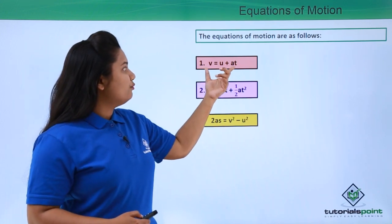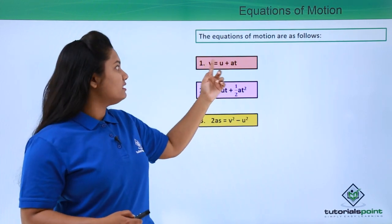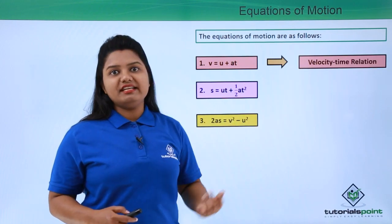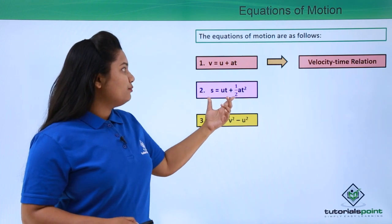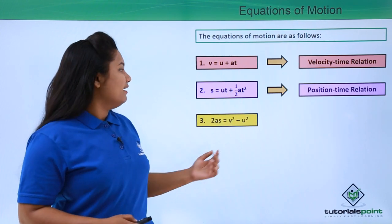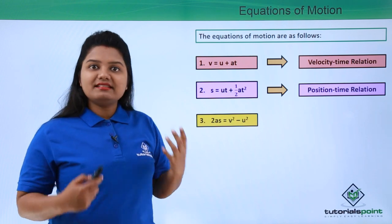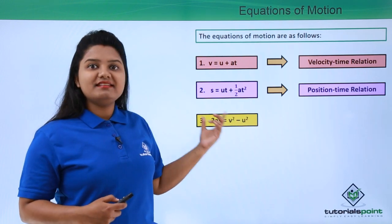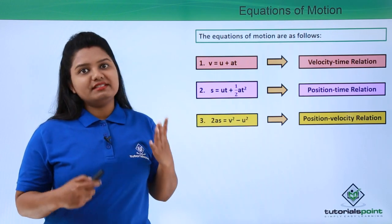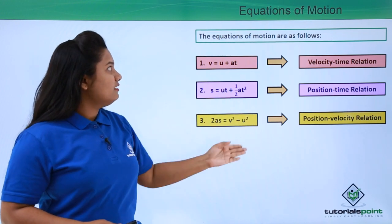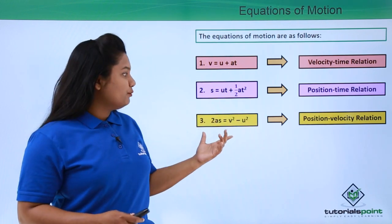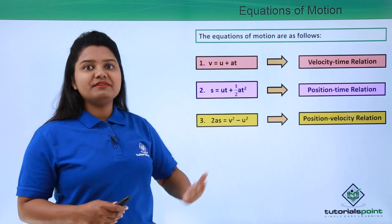The first equation of motion is basically a relation between the velocity and time of the body, so it is otherwise called the velocity-time relation. The second equation of motion is a relation between the position and time of the body, which is why it is known as the position-time relation. And the third equation of motion is a relation between position and velocity, so it is called the position-velocity relation.